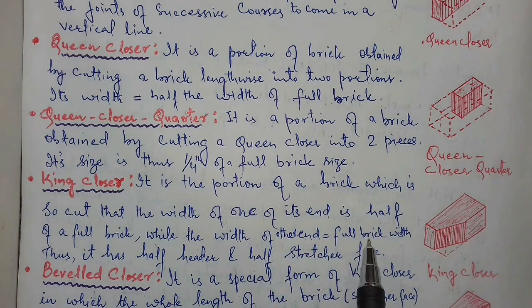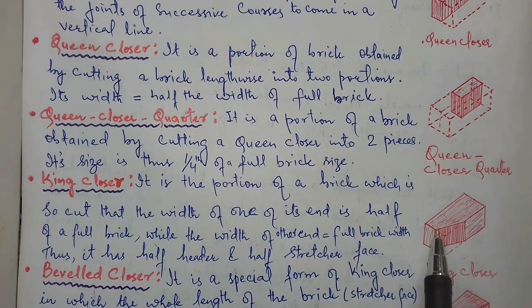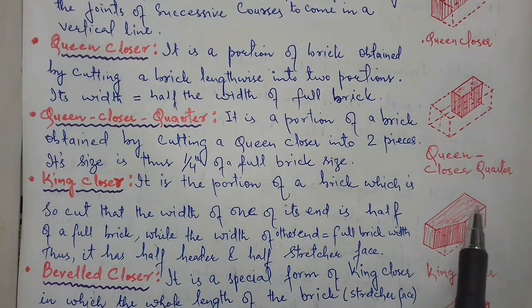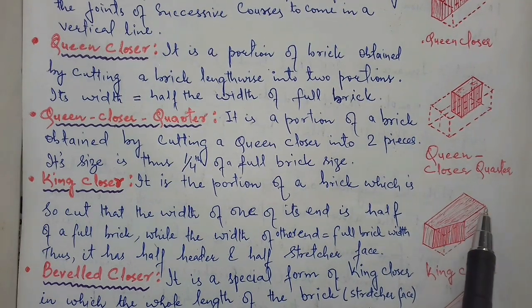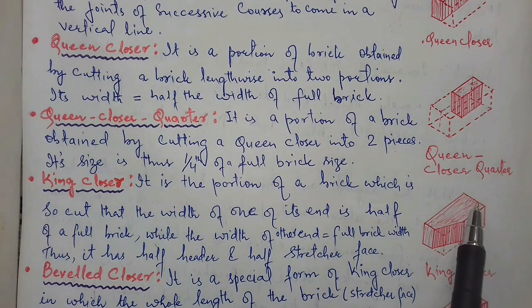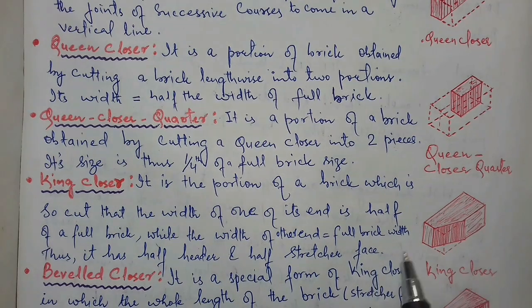King closer: it is the portion of a brick which is cut such that the width of one of its ends is half of a full brick, while the width of the other end is equal to the full brick width. As you can see, one end has half the width of a full brick and the other end retains the full width. Thus a king closer has half a header and half a stretcher.